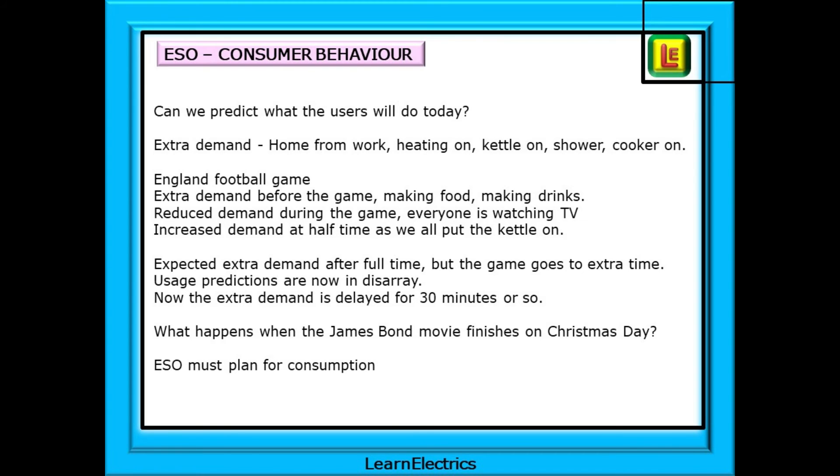If there is a football game on TV tonight, how much extra demand will there be before the game? As viewers make food, make drinks, and so on. And then reduce demand during the game. Everyone is watching TV. Nobody moves. And the expected increased demand at half-time, as we all put the kettle on again. With the same extra demand after full-time, but what if the game goes to extra time? Now the usage predictions are in disarray. All the plans are messed up, but they have a plan for this. And maybe the extra demand is delayed for 30 minutes or so because of the extra time.